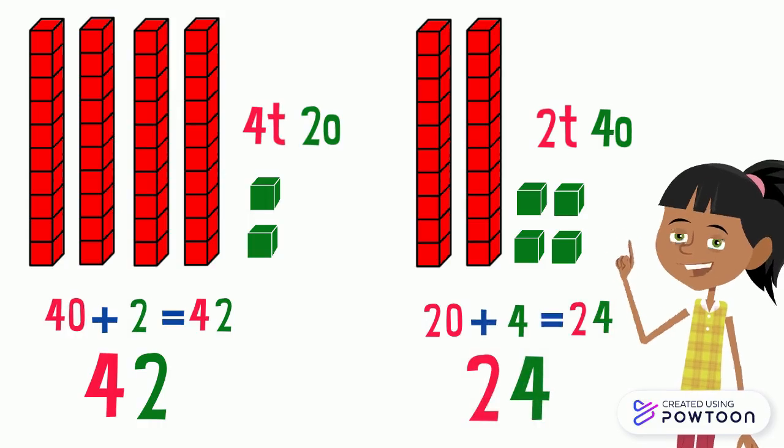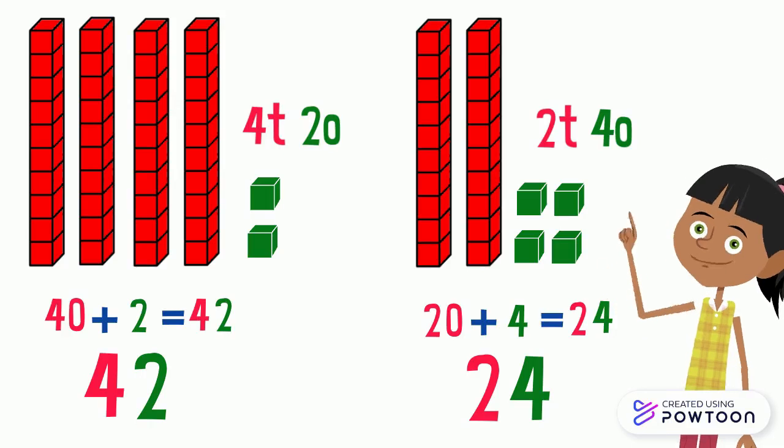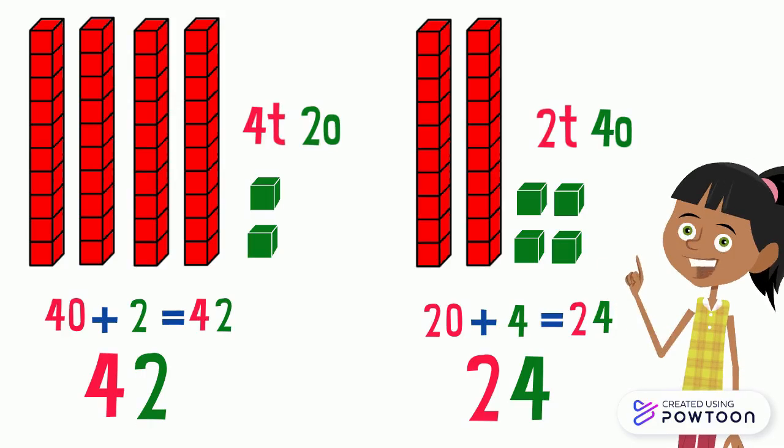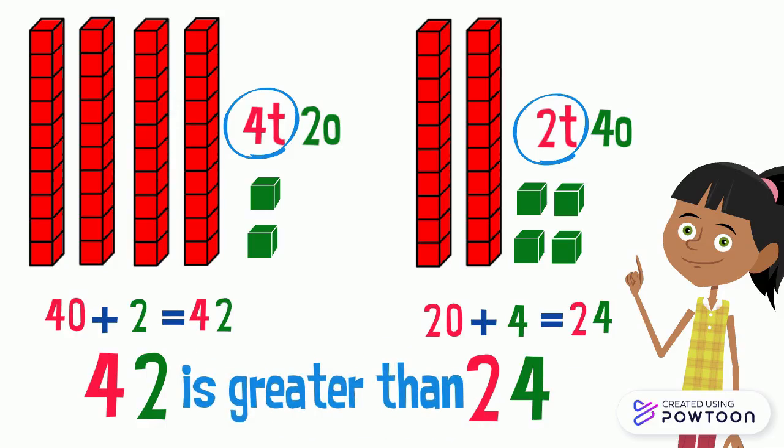To compare 42 and 24, it is enough to compare the tens digit of these two numbers. In the number 42, there are 4 tens. And in the number 24, there are 2 tens. Since 4 tens is greater than 2 tens, then the number 42 is greater than the number 24.